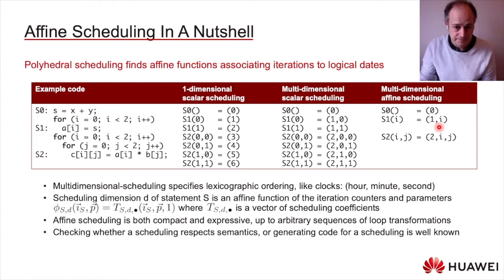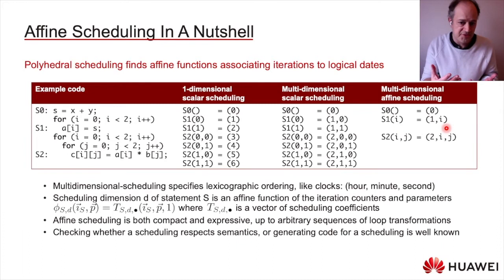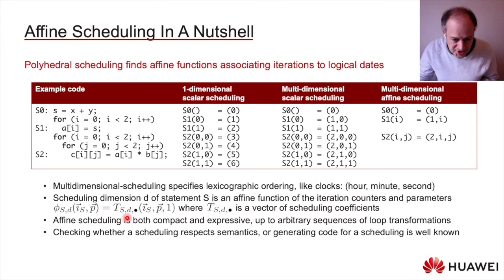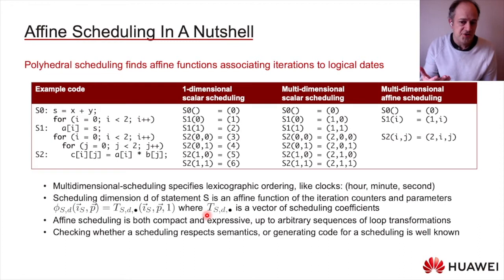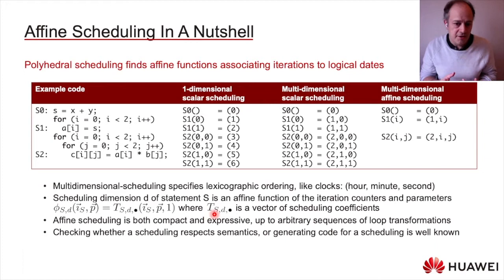In polyhedral scheduling, each component of the date uses affine functions of loop counter values (like i and j), constant parameters (like n), and scalar values. Formally, we use a matrix notation where each row of matrix T stores the coefficients of an affine function. For example, the function 1·i + 2·j + 3·n + 4 has coefficients [1, 2, 3, 4] stored in T. This representation is compact and expressive — it can represent arbitrary sequences of loop transformations — and checking whether a scheduling respects data dependencies, or generating code from it, is well-known.